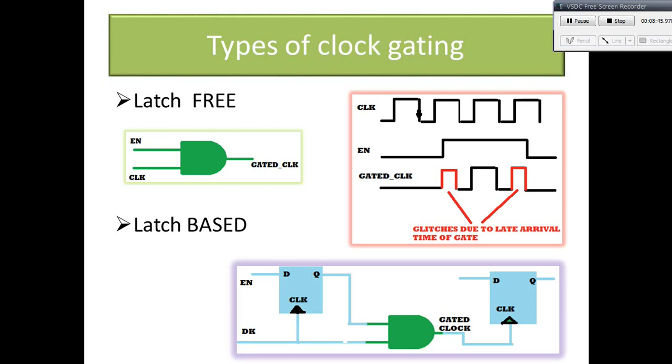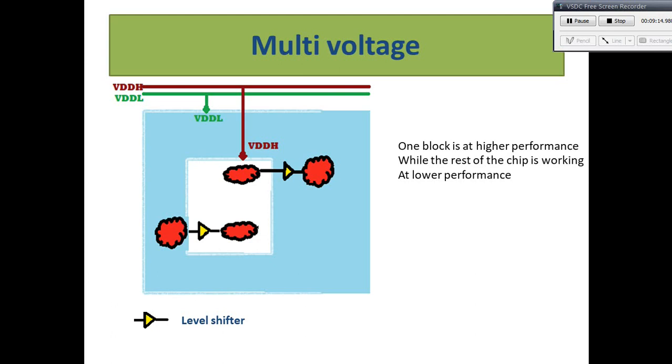The latch-based clock gating style adds a level sensitive latch to the design to hold the enable signal from the active edge of the clock until the inactive edge of the clock. Since the latch captures the state of the enable signal and holds it until the complete clock pulse has been generated, the enable signal needs only be stable around the rising edge of the clock, just as in traditional ungated design style.